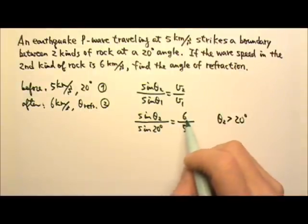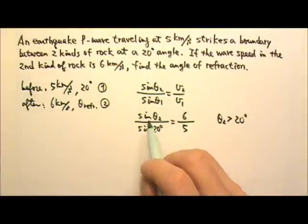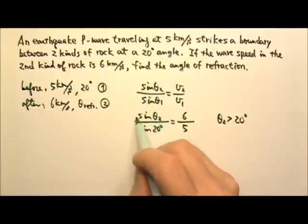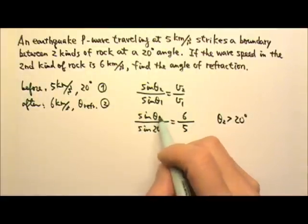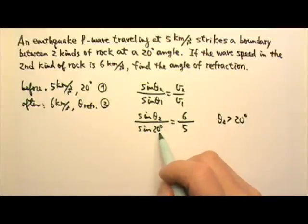because if the numerator here, the speed side is bigger, that means the numerator on that side also must be bigger, so sine theta 2 has to be bigger than sine 20 degrees. And that means theta 2 must be bigger than 20 degrees,